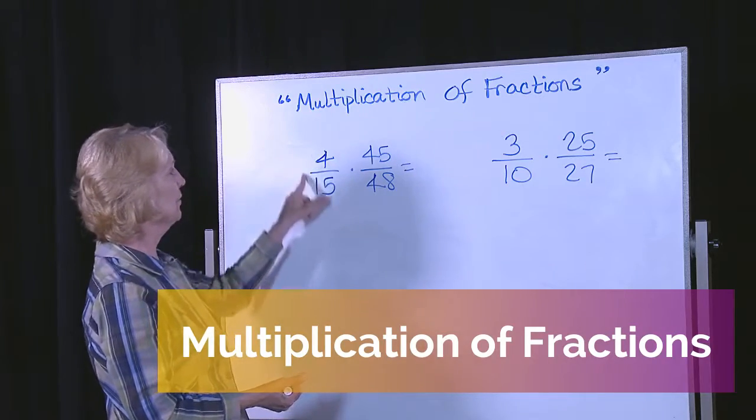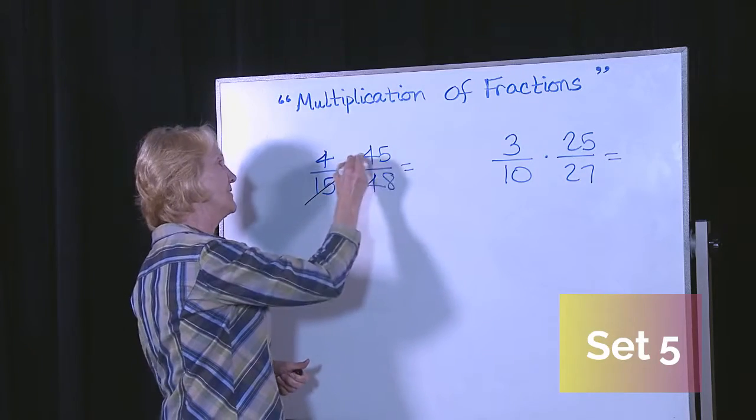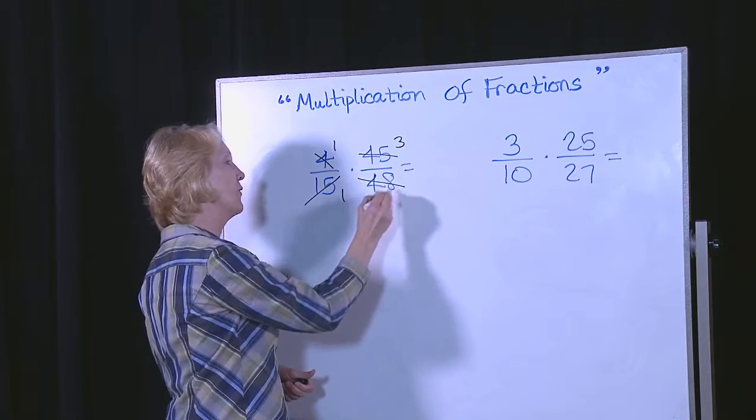Okay, on the first one, 4 fifteenths times 45 over 48. 15 goes in here once. 15 goes in there 3 times. 4 goes in here once. 4 goes in there 12 times.